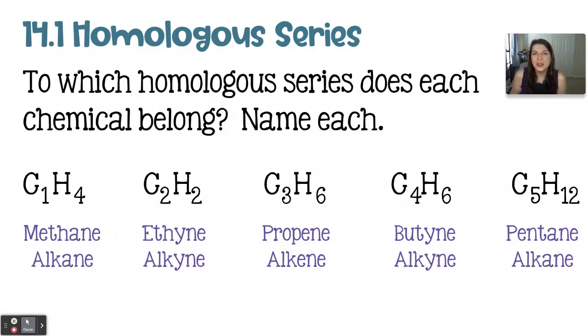In C2H2, the number of carbons is two. If I double it, I get four. And then to get to two, I'd have to subtract two, which means that I am working with an alkyne. Because this is a two-carbon alkyne, the molecule should be named ethine.